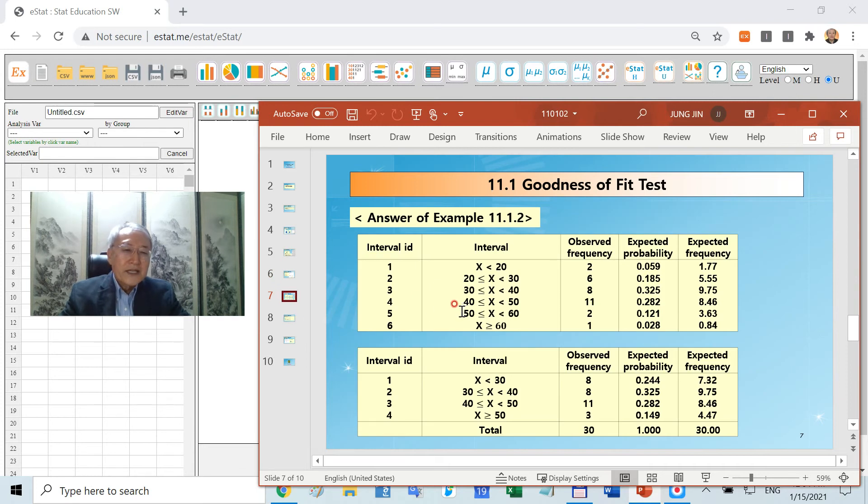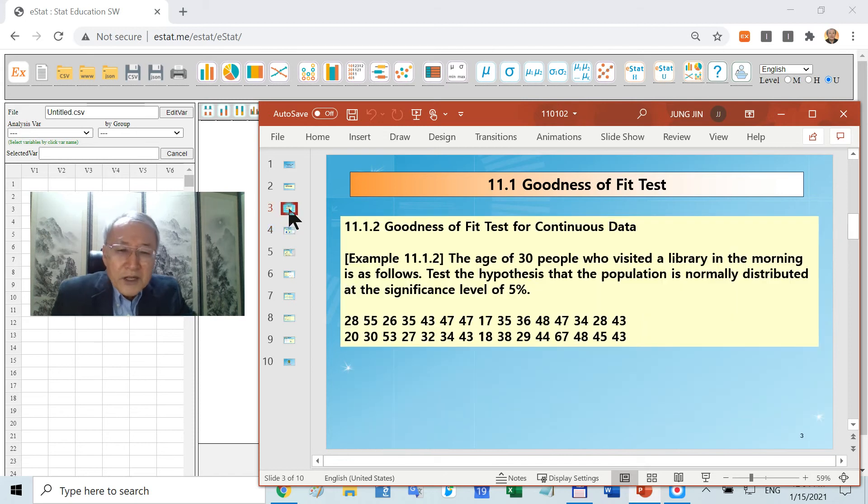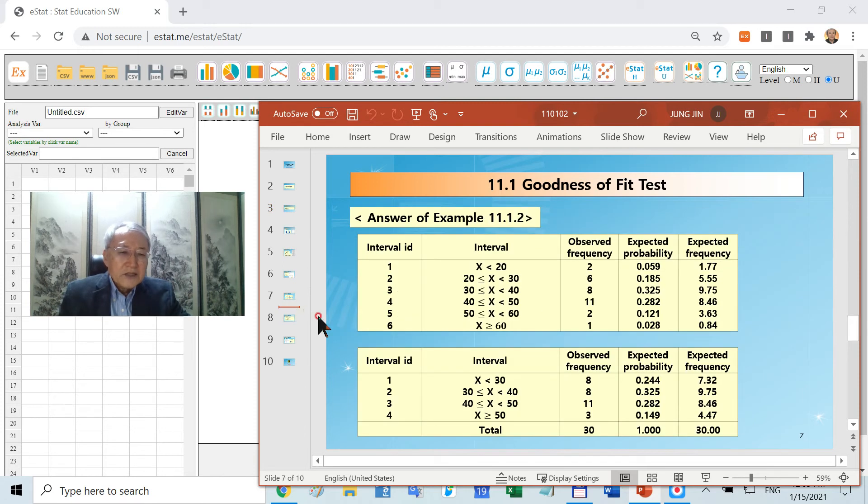You can summarize in this manner. On this interval, observed frequency looks like this. Out of total data, you can calculate the expected frequency. We have 30 data points. To calculate the expected frequency, multiply the probability by 30. Then you have the expected frequency.